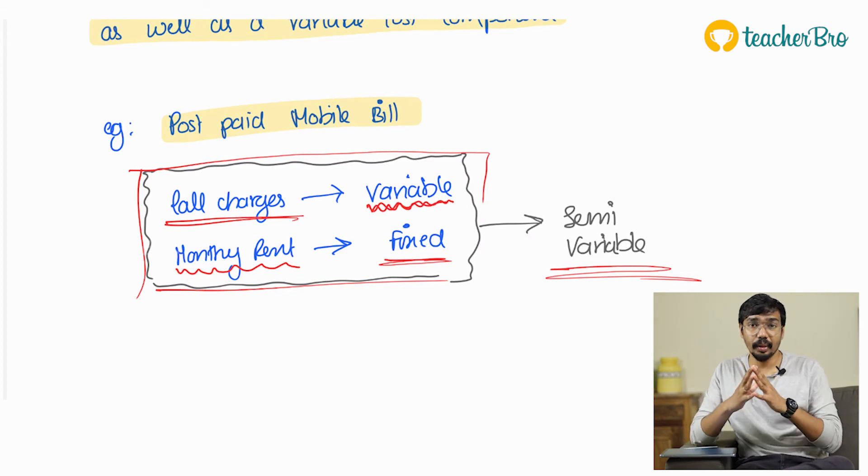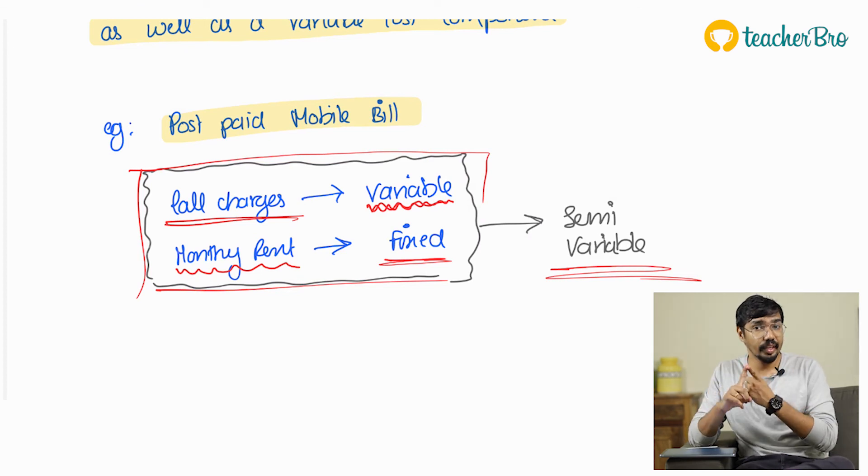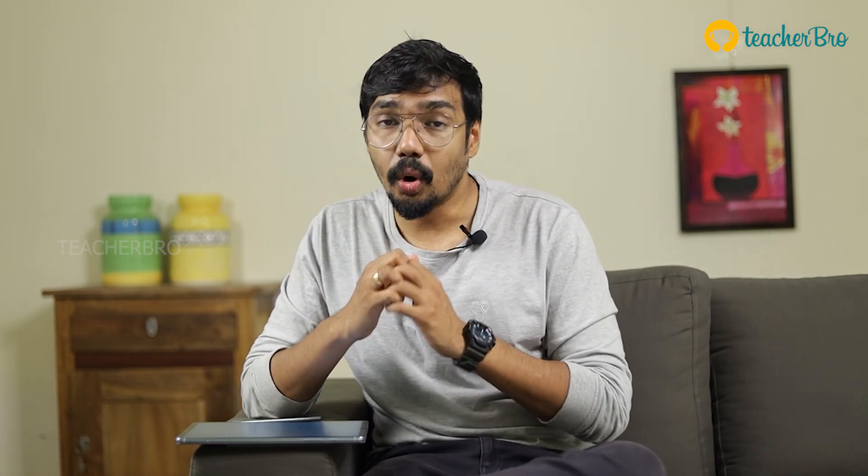So to summarize, in marginal costing, variable cost is variable cost. Fixed cost and semi-variable cost are also classified separately. In the next video we will cover break-even point and contribution.